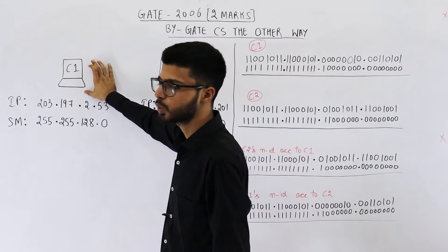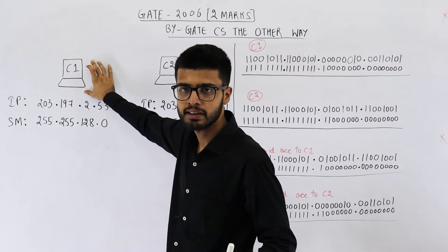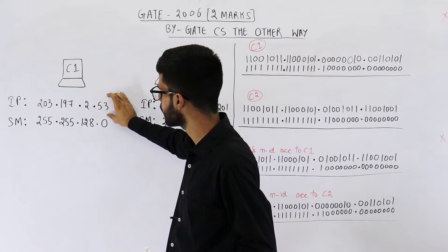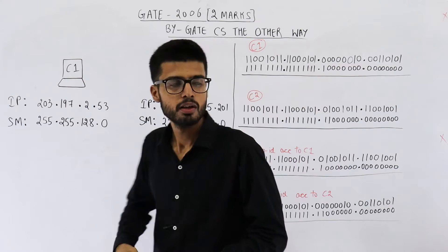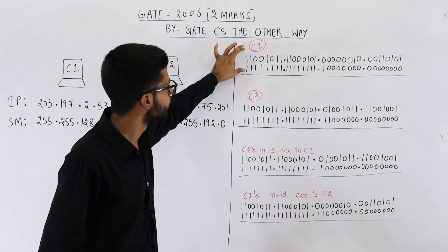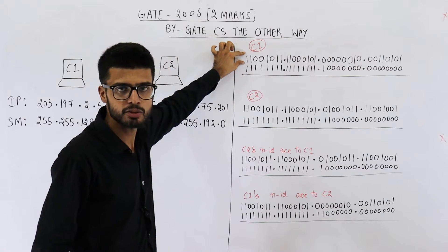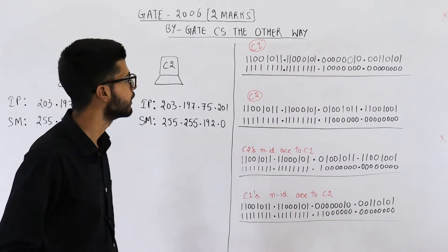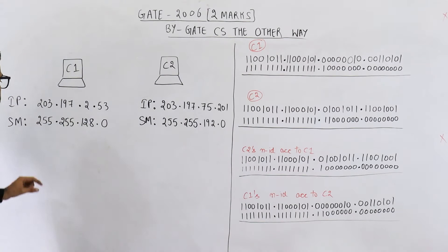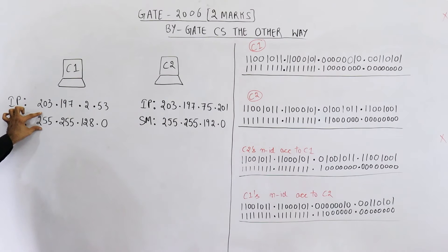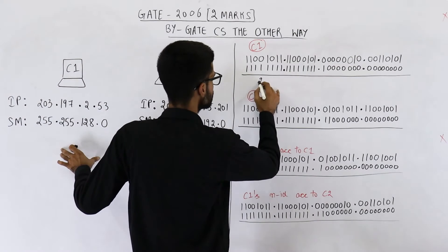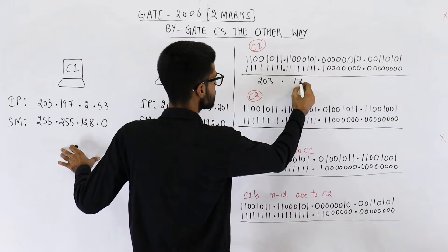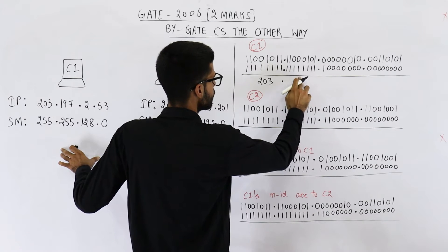Let us find what is the network ID of C1. For finding the network ID of any machine, take its IP address and its subnet mask and perform an AND between both of them. I have converted both the IP address of C1 and subnet mask of C1 into binary. Any number ANDed with 255, meaning all eight bits are ones, gives that same number. So the network ID will be 203.197.0...